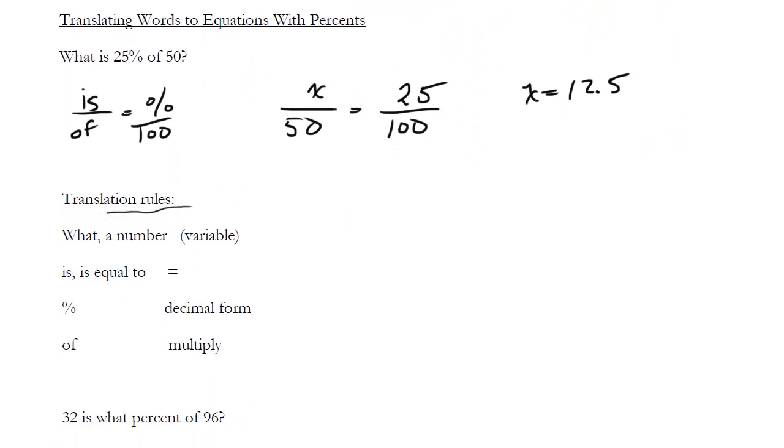That's the is over of, but it's not super reliable. I prefer these translation rules and these are very important, so make sure you learn them. When you have what or a number, that's your variable, that's your x. When you see is or is equal to or even past tense was, that's your equal sign. When you have percent, that's of course your percent, but you put that in the decimal form in your equation. And the most important one is right here. When you've got of, it means multiply. Of is multiply. This is the key to a lot of questions for translating from words into an equation.